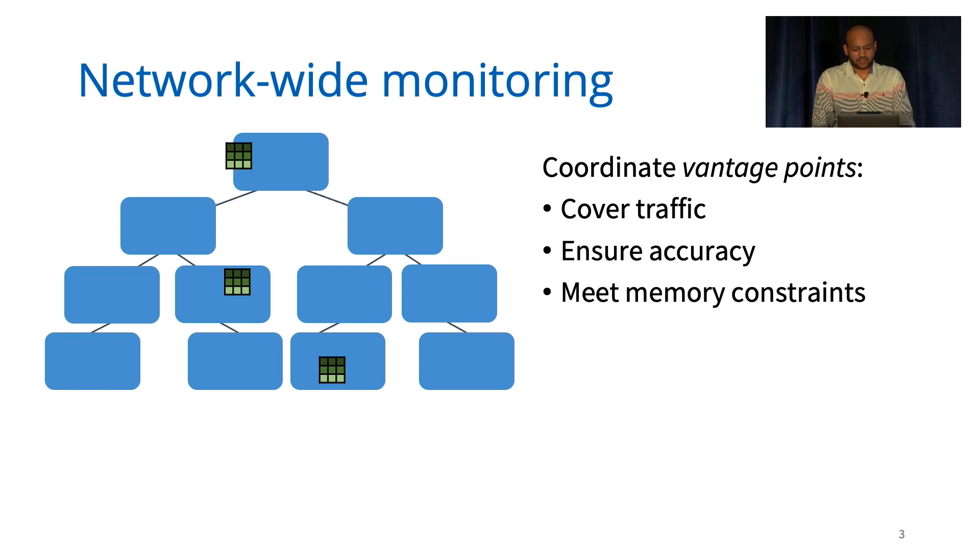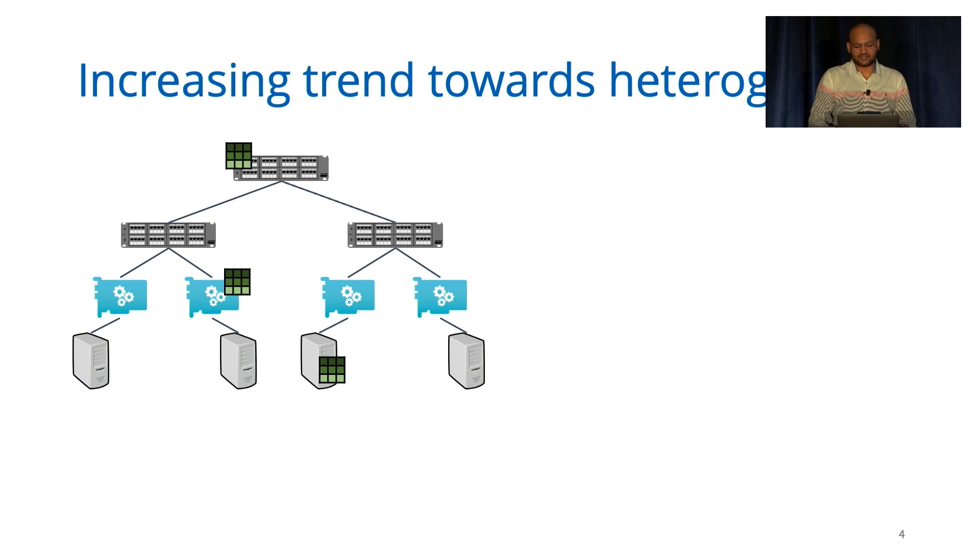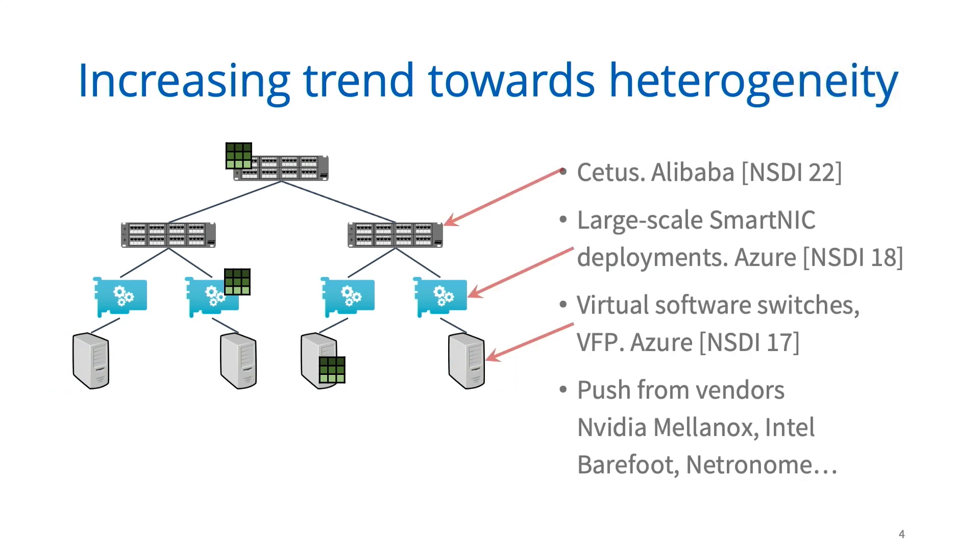However, while doing so, operators will often assume a network of a homogeneous set of devices, which offer similar capabilities, resources, or performance. This reality is quickly changing, with an increasing trend towards heterogeneity. We already see deployments of different programmable switches, smart NICs, and software switches in data center environments. Along with that, there's a new generation of diverse programmable hardware from a variety of vendors.